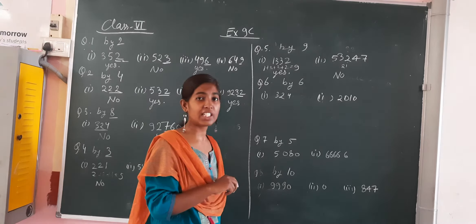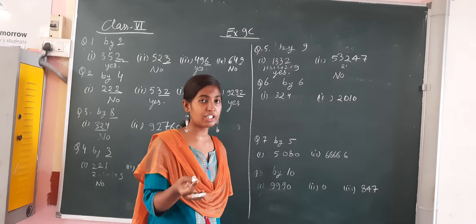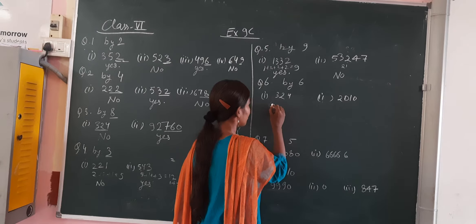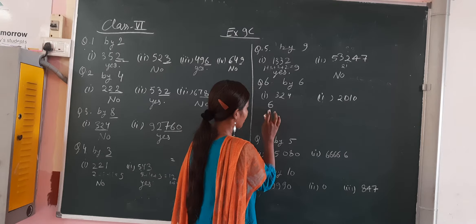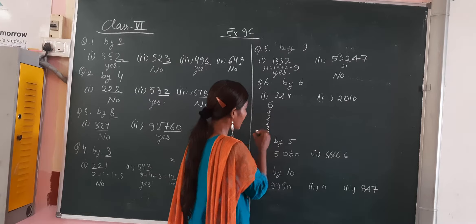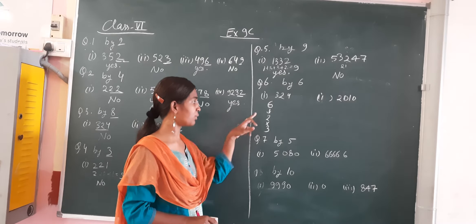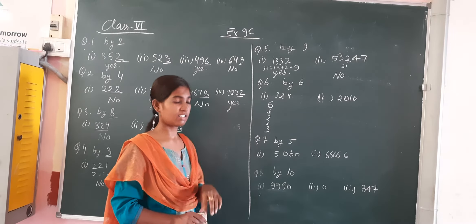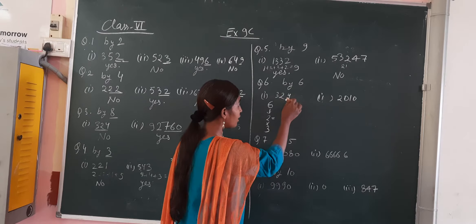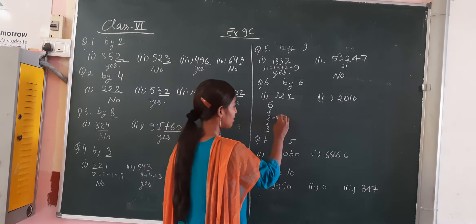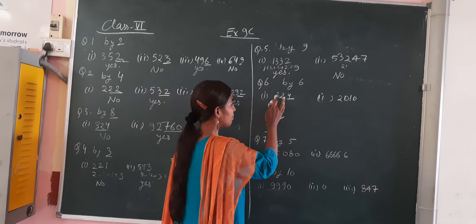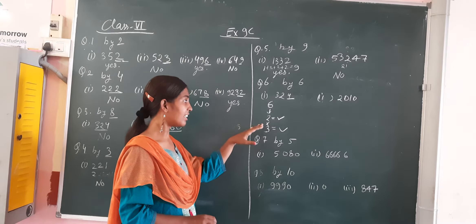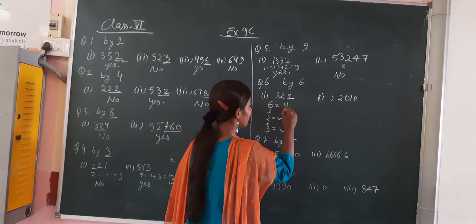Now question number 6 — by 6. How will we check divisibility by 6? We have not studied the divisibility rule of 6, and there is no specific divisibility rule of 6. So what we can do — we can write 6 as 2 times 3. If the number is divisible by 2 as well as 3, then the number is also divisible by 6. Check: the last digit is even, so yes it is divisible by 2. Check whether it is divisible by 3 or not: 3 plus 2 is 5, 5 plus 4 is 9 — yes, it is divisible by 3. Since divisible by both 2 and 3, it is also divisible by 6.